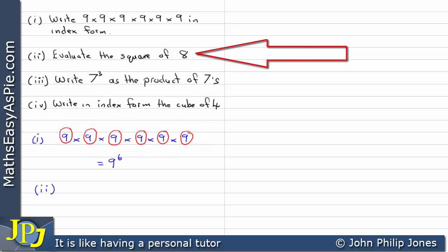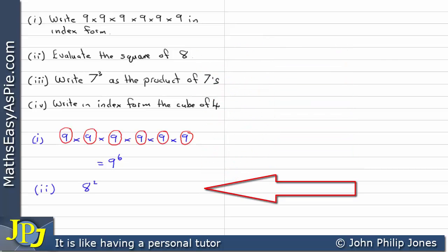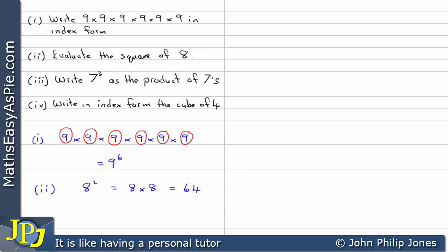Let's have a go at the second one: evaluate the square of 8. The square of 8 is 8 to the index of 2, which is equal to 8 times 8, which is therefore equal to 64. So when you see 'the square of something', you know you're taking that something and putting an index of 2 there. In this case, it's the square of 8, giving us 8 times 8 equals 64.